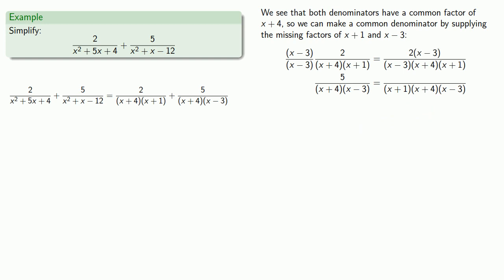And likewise, the second rational expression already has an x plus 4 and an x minus 3 in the denominator, so it's missing an x plus 1. So we'll multiply numerator and denominator by x plus 1. And now both rational expressions have the same denominator.